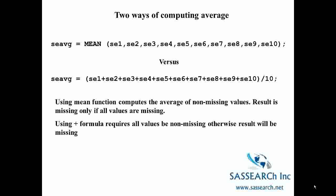For example, let's say SE1 and SE2 were missing. SAS would compute the mean of SE3 through SE10 because those variables all have values. When we use a formula it requires all values to be non-missing; otherwise the result will be missing. So if SE1 and SE2 were missing for a particular subject, then SE average would also be missing. That's an important difference when computing an average using a function versus using a formula.